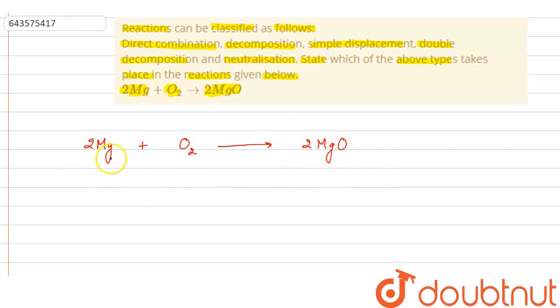And this is what happening here. Here, magnesium and oxygen combines to form a new product that is magnesium oxide. So, it is a direct combination reaction.